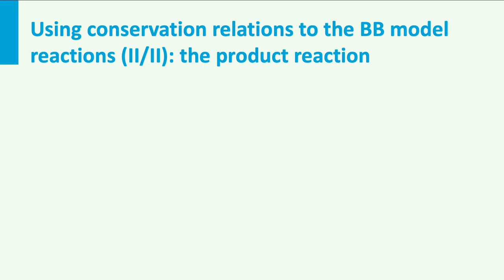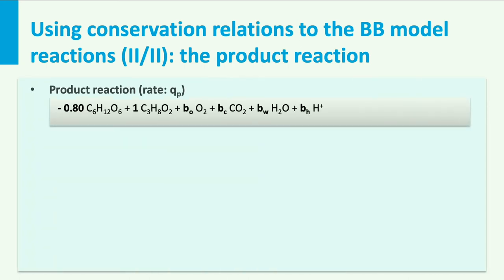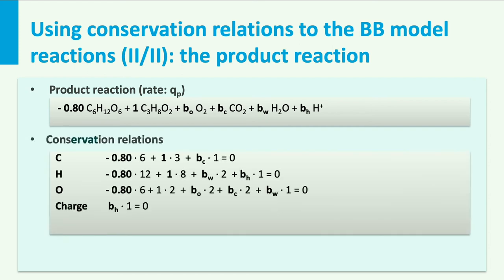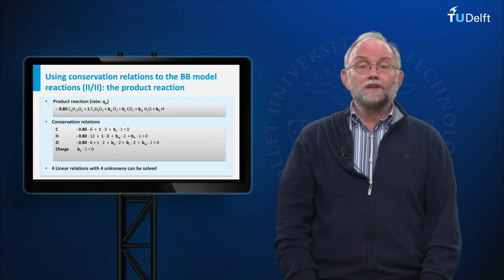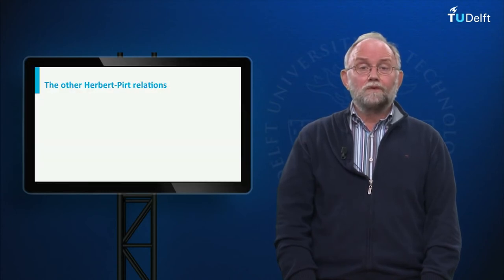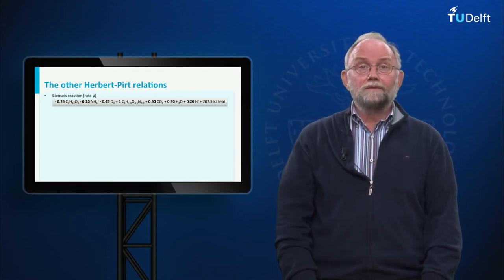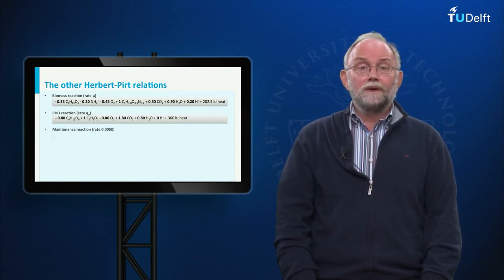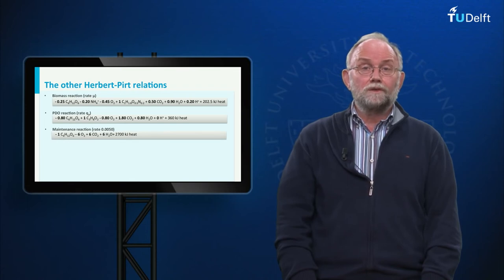We can do exactly the same for the coefficients B_i of the black box product reaction. In this reaction we do not have the element nitrogen, because PDO doesn't contain N. So we have four conservation relations — C, H, O, and CHARGE — leading to four equations and four unknowns, which can be solved. The biomass reaction runs at rate mu, the PDO product reaction at rate QP, and the maintenance reaction at rate 0.005.